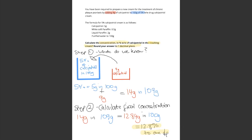And then we need to calculate the concentration as a percentage in the resulting cream. The resulting cream is after they've both been mixed together. So if it's 5%, it's 5 grams in 100. You add in the 9 grams, then you get 14 grams in 109 grams.